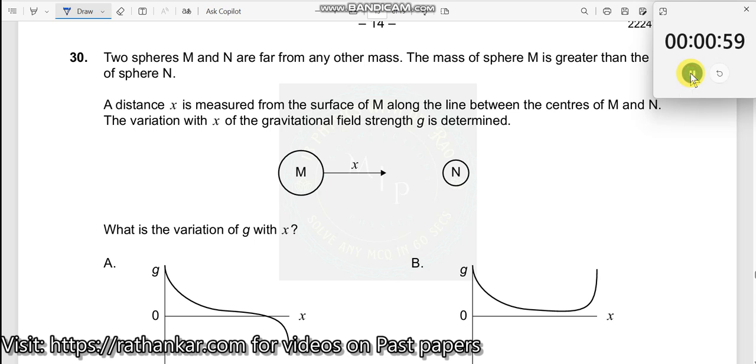Question number 30: Two spheres M and N are far from each other. The mass of M is greater than the mass of sphere N. Distance x is measured on the surface of M along the line joining the centers of M and N. The variation with x of the gravitational field strength g is determined. What is the variation of g with x?